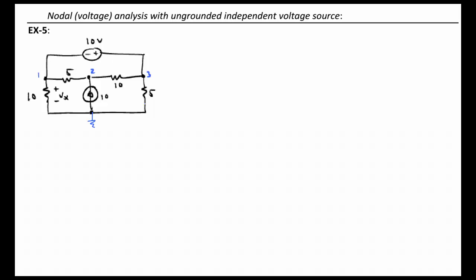We can't say that the voltage source constrains either node 3 or node 1, but we can say that the voltage difference between node 3 and node 1 is constrained. So, there is a constraining equation. It's going to be V3 minus V1 is equal to 10 volts.